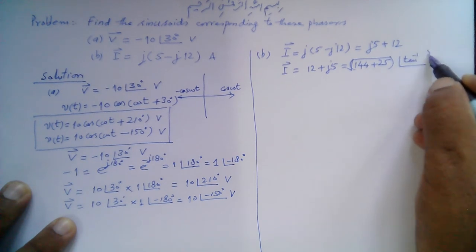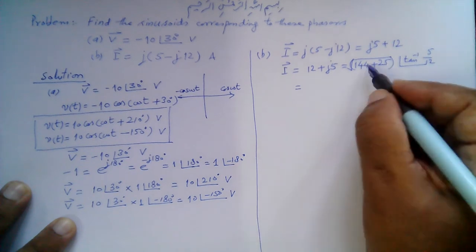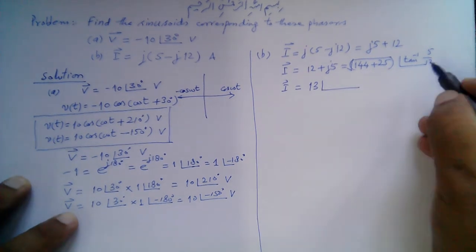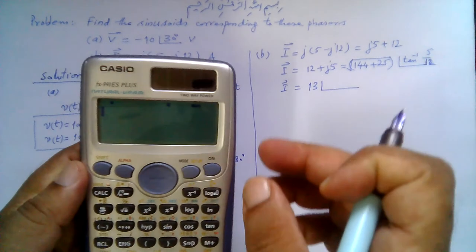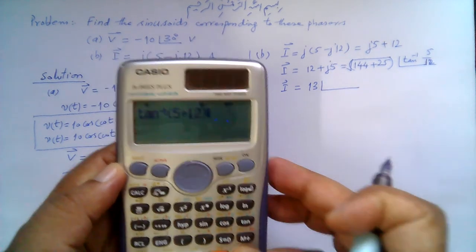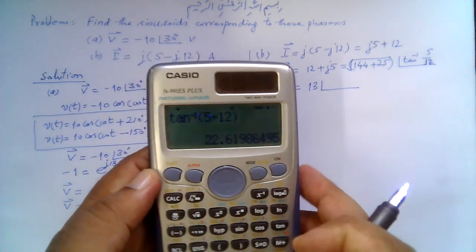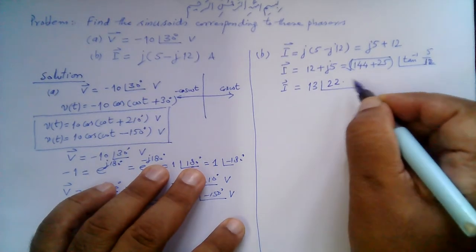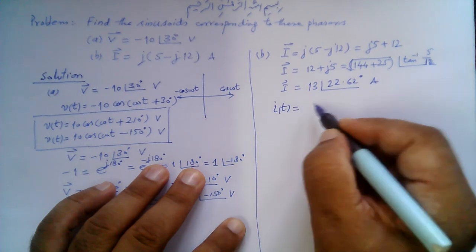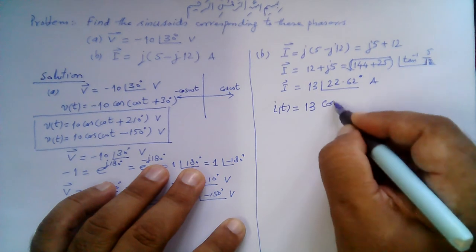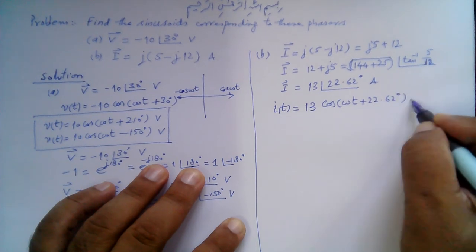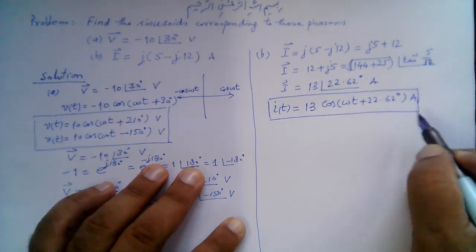Converting 12 plus j5 to polar form: the magnitude is the square root of (12² + 5²) equals the square root of (144 + 25) equals the square root of 169 which is 13. The angle is tan⁻¹(5/12), which can be calculated with a calculator and gives approximately 22.62 degrees. So the corresponding sinusoid is I(t) equals 13 cosine(ωt plus 22.62 degrees) amperes.